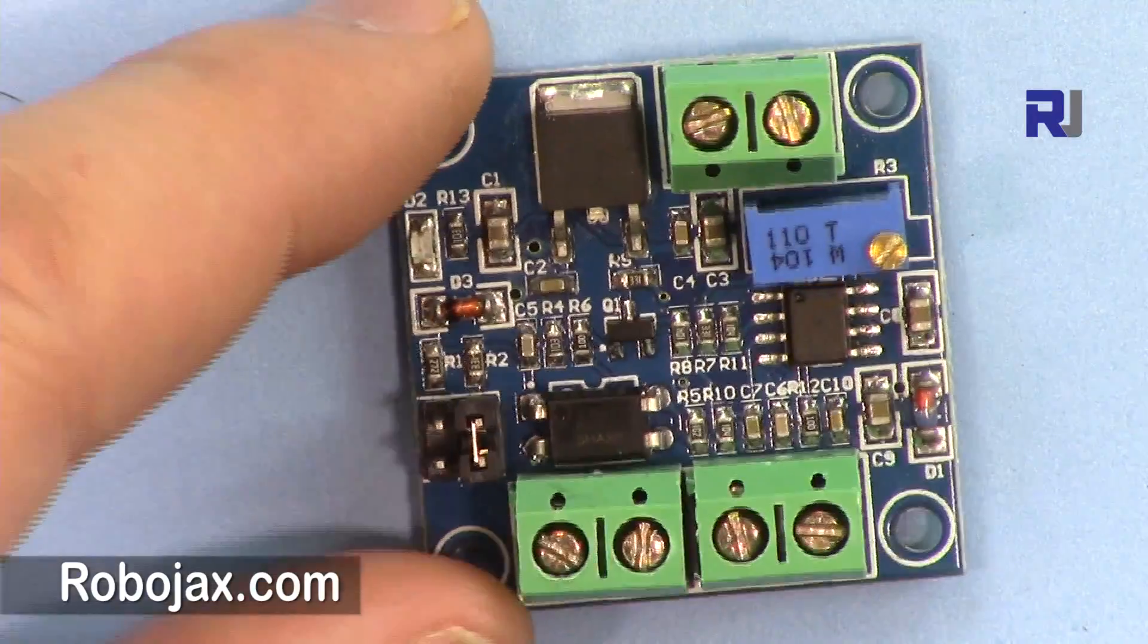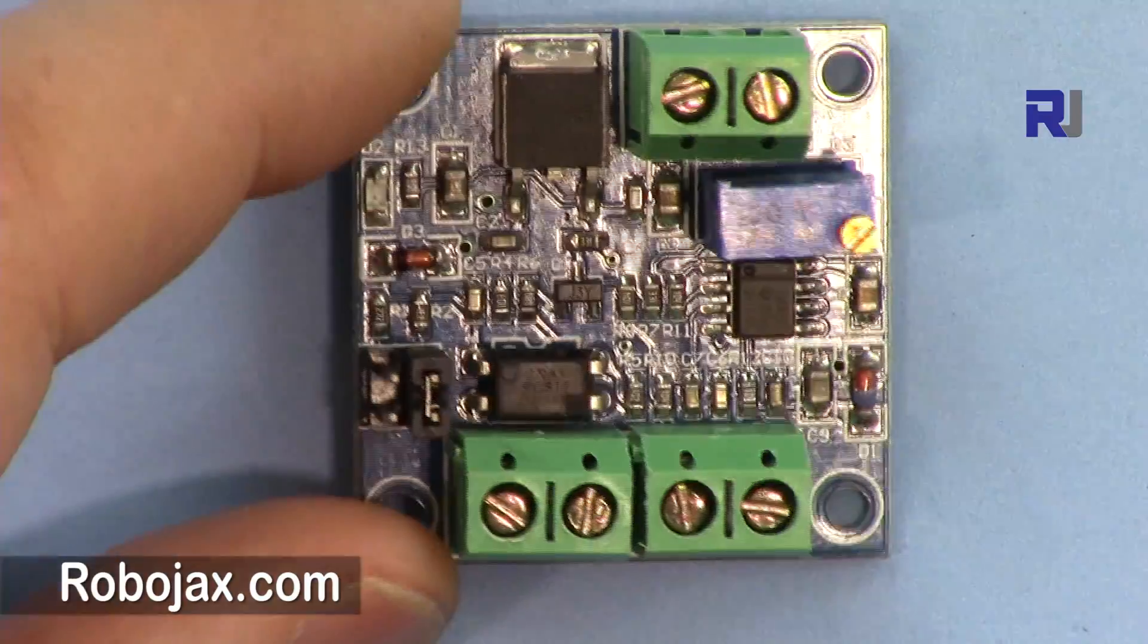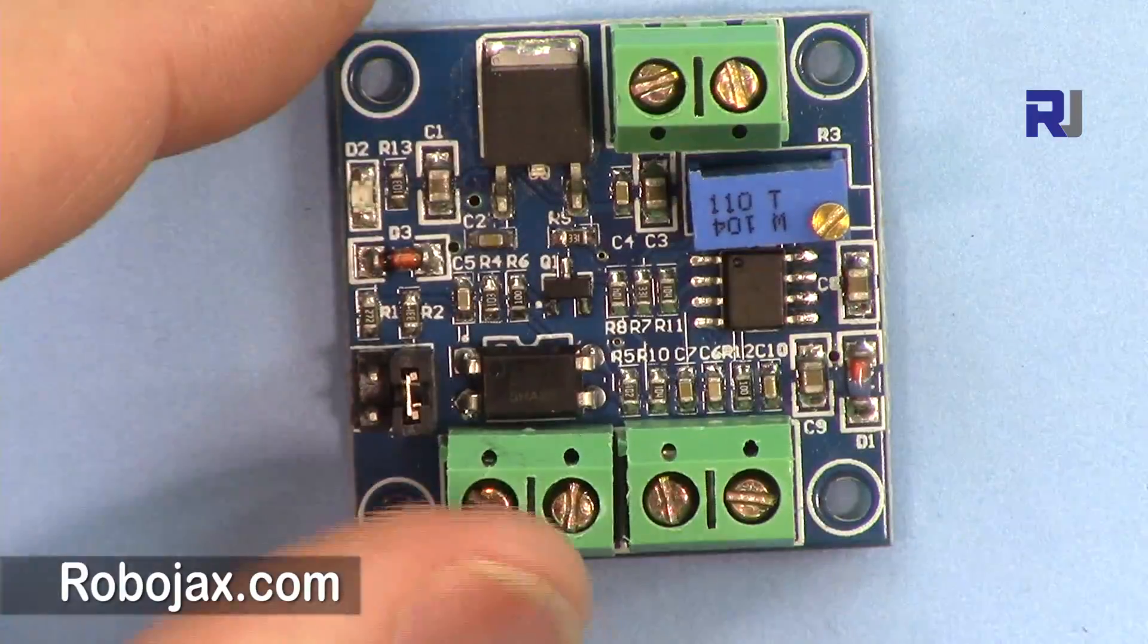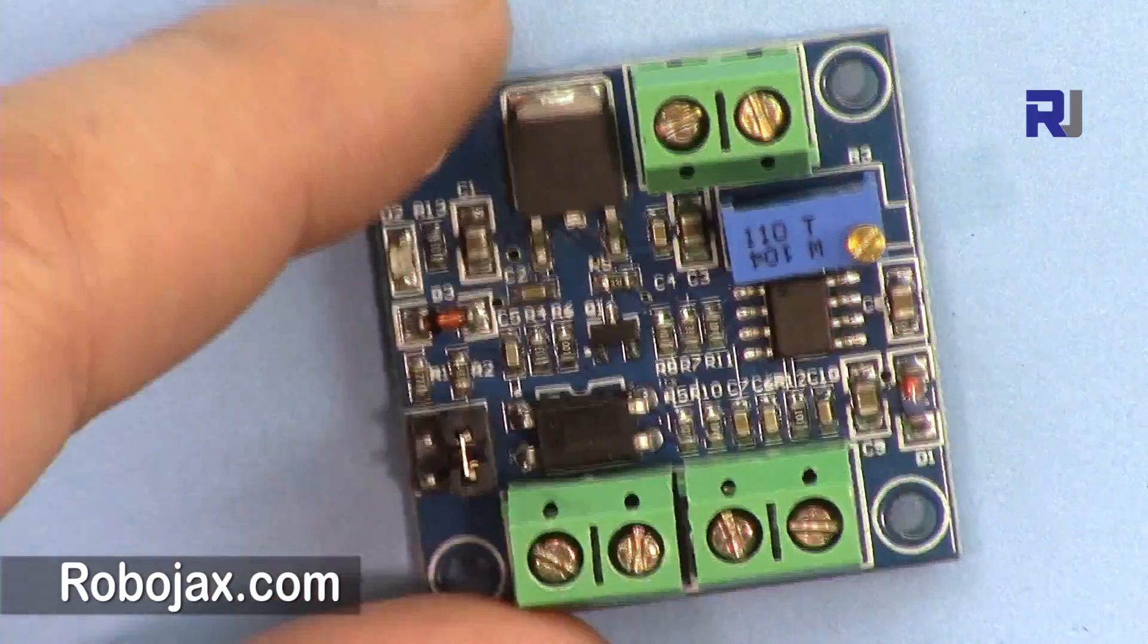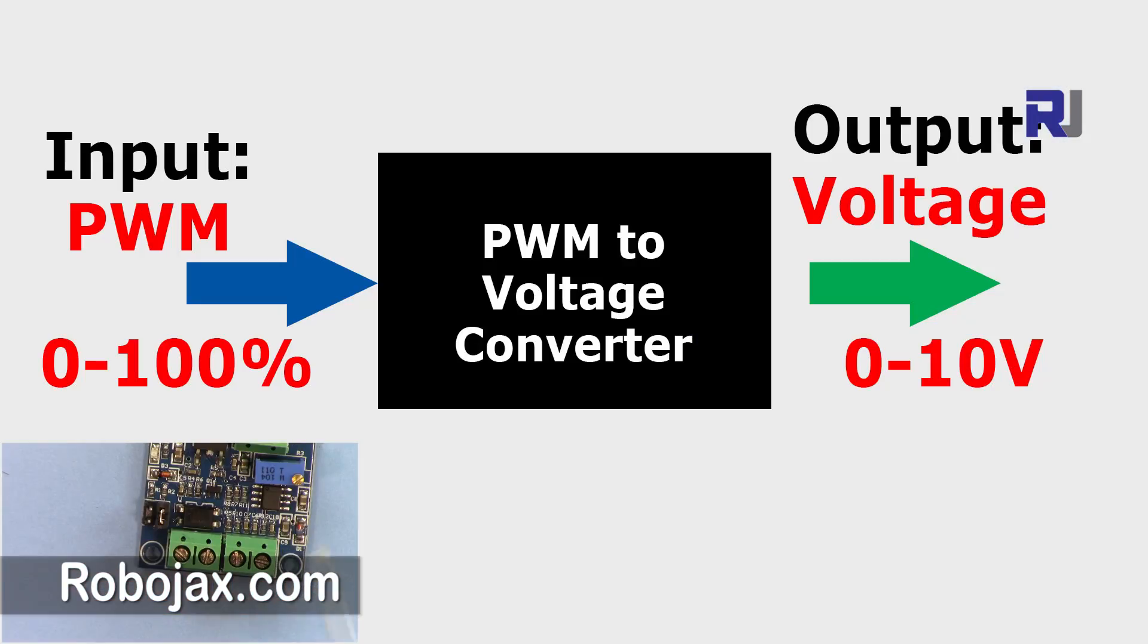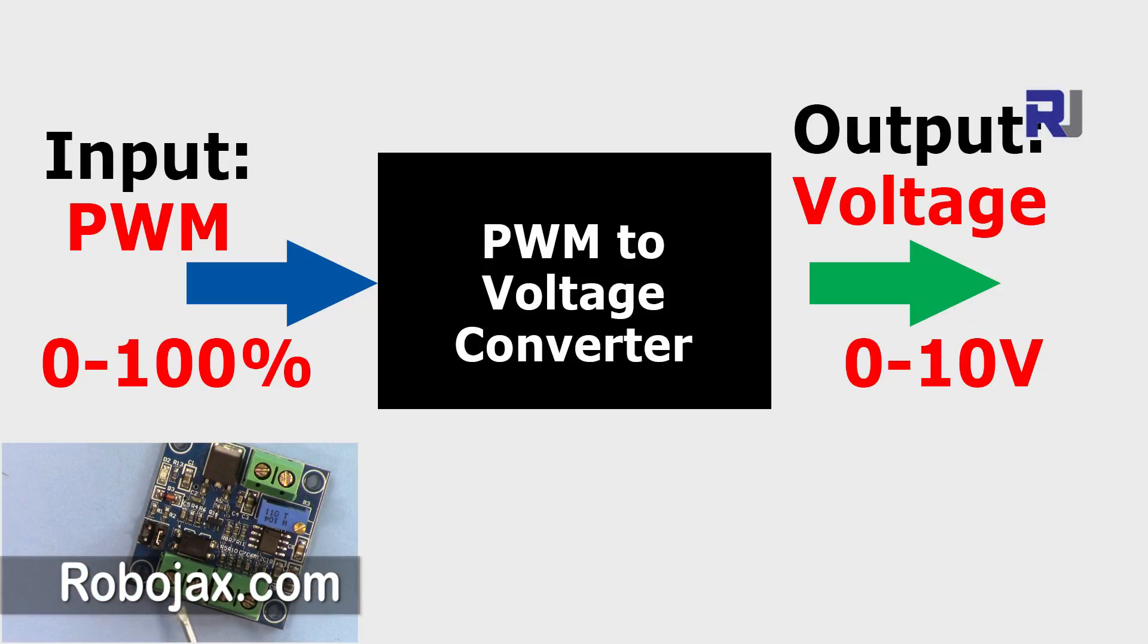In many industrial or educational applications you need to convert pulse width modulation to voltage. You want to find the relationship between the two to maybe control a motor or whatever you want to do. This module will get a pulse width modulated signal at the input and convert it to voltage and give you the output.